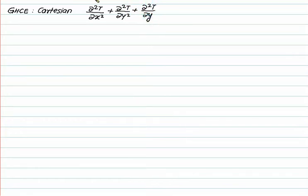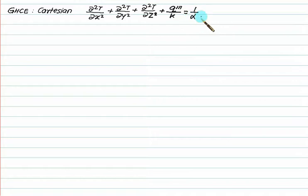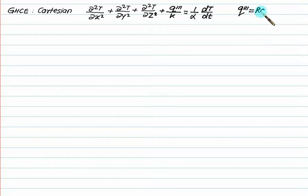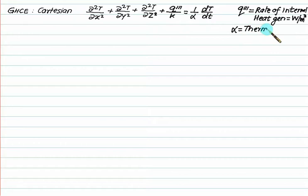This represents the variation along x, y, z directions, plus q''' / k, where q''' is the rate of internal heat generation per unit volume (expressed as W/m³) and k is the thermal conductivity of the solid, equal to (1/α)(∂T/∂t). Alpha (α) is called thermal diffusivity, given by k/(ρ·Cp), where ρ is mass density and Cp is specific heat, with units of m²/s.